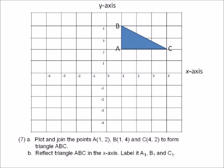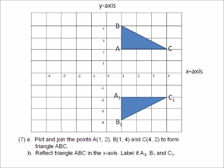Now remember you have to reflect that in the x-axis. Find the x-axis and draw it on the other side. Count the spaces: if A is 2 points above, A1 would be 2 points below. If B is 4 above, B1 would be 4 below. Same for C. There you have the answer — that's the triangle reflected in the x-axis. Label it: A becomes A1, B becomes B1, C becomes C1.